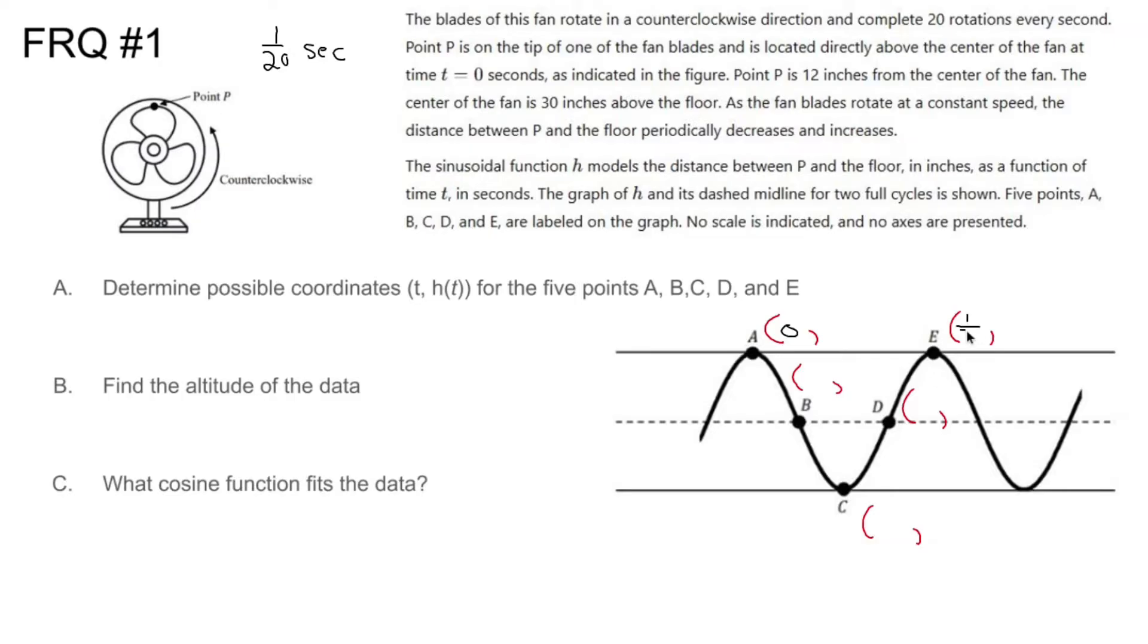It rotates 20 times per second, which means it completes an entire cycle every 1/20th of a second, which means E is going to be 1/20th. To find B, C, and D, you are comparing where B, C, and D are versus E. And then you're going to use a fraction to multiply it to 1/20th. B is 1 quarter of its way to E. So B is going to be 1 quarter of 1/20th of a second, which is 1/80th. C is halfway in between. So C is 1 half of 1/20th of a second, which is 1/40th. D is 3 quarters of its way to E. So 3 quarters of 1/20th of a second is going to be 3/80ths.